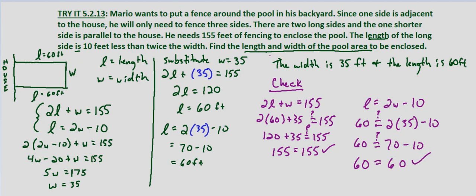So we can say definitively that the width of the pool area is 35 feet and the length of the pool area is 60 feet.